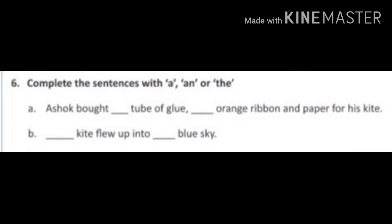Question number 6: complete the sentences with a, an, or the. In sentence me aapko article ka use karna hai. Ashok bought blank tube of blue blank orange ribbon and paper for his kite. Next, blank kite flew up into blank blue sky. Here, you have to fill in the correct articles.